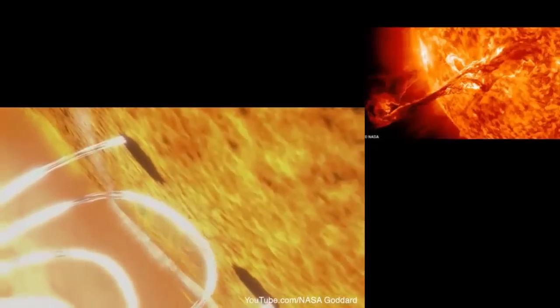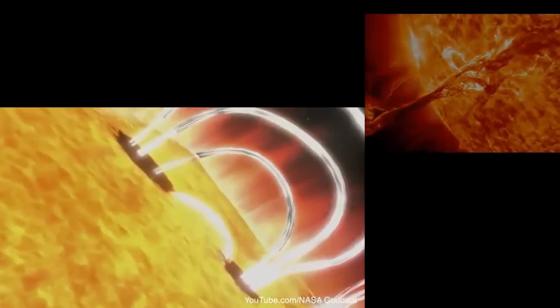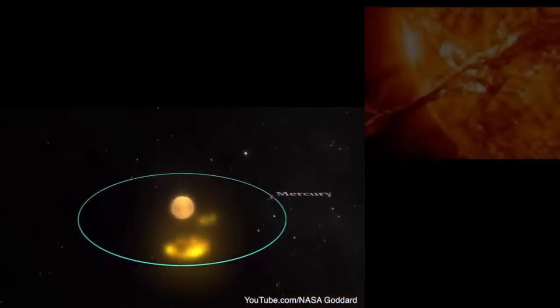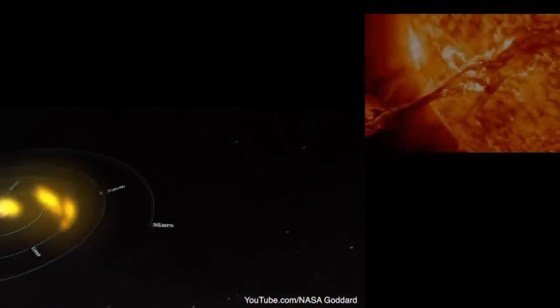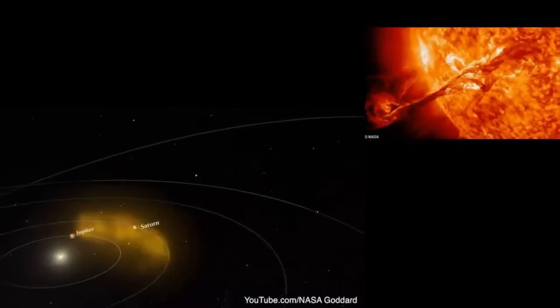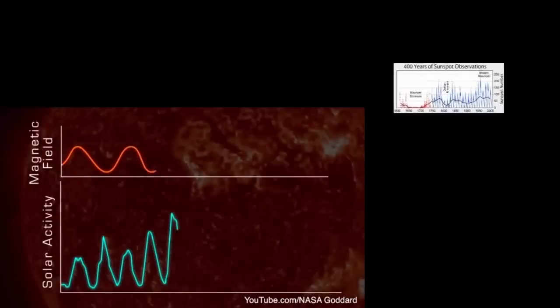These magnetic fields power solar flares and coronal mass ejections, which can affect Earth and other objects in the solar system. As the sunspots increase, so does the frequency and severity of flares and CMEs. The Sun's 11-year cycle is a symptom of a longer 22-year cycle called the solar cycle or Hale cycle, which affects the Sun's magnetic fields.